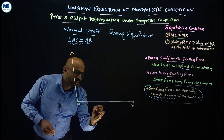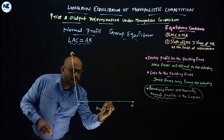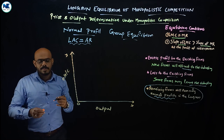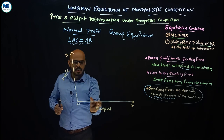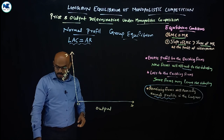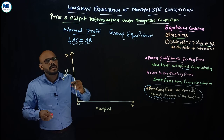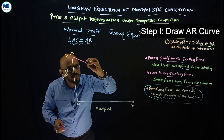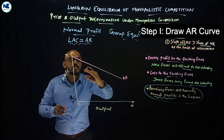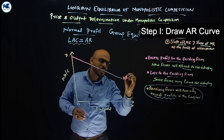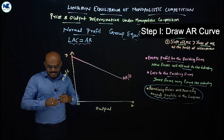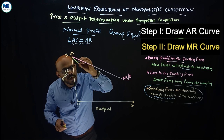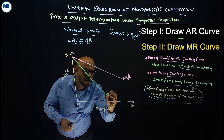On the horizontal axis or X-axis we take output. On the vertical axis or Y-axis we take price, revenue, and cost. First we draw average revenue - the demand curve is more elastic and downward sloping, also equal to the demand curve. Then we draw marginal revenue, which is below average revenue and more steep.